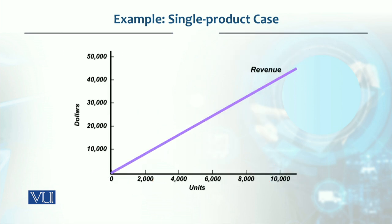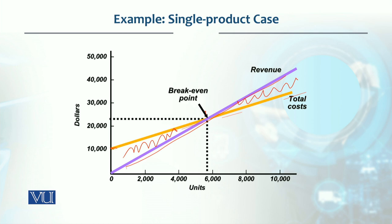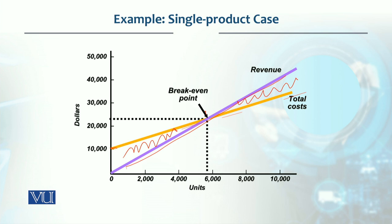Looking at this graphically, we have the revenue line and the total cost line. Since fixed cost is $10,000, total cost starts at $10,000. The area above the cost line is your profit portion and below is your loss portion. The break-even point is where profit and loss are equal. Extending horizontally, it is slightly less than 6,000 units, and vertically it is slightly more than $20,000 — consistent with what we calculated mathematically.